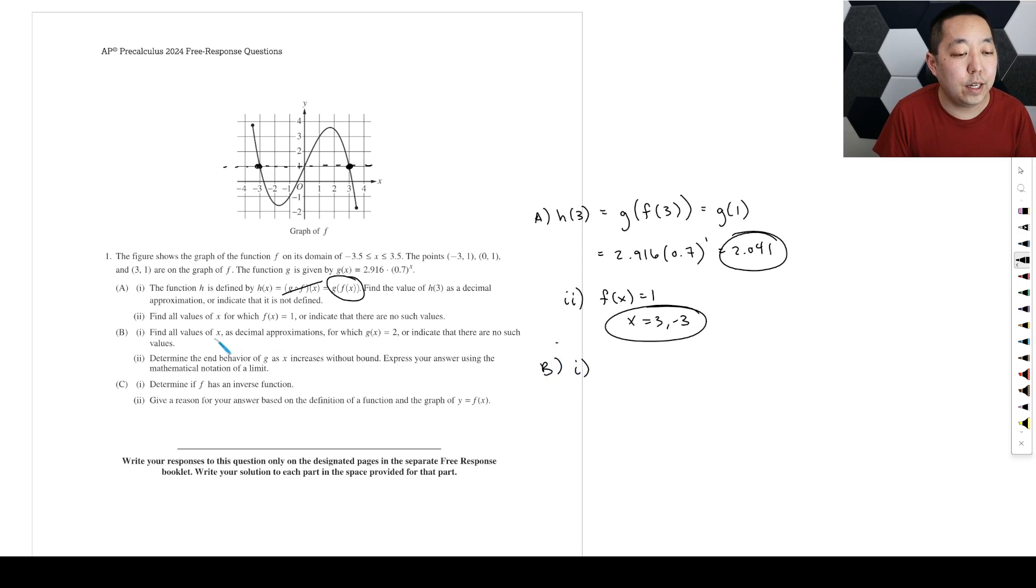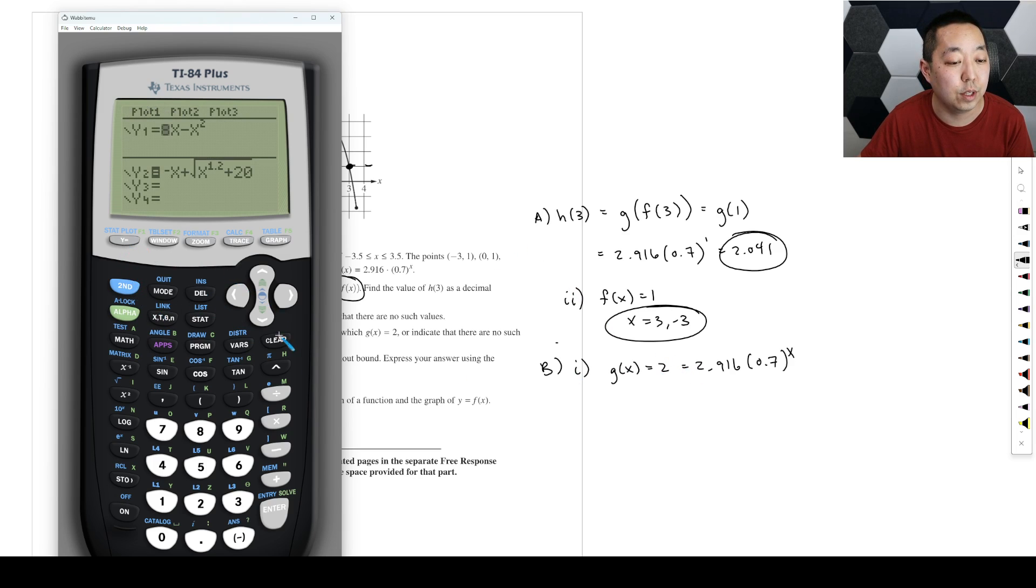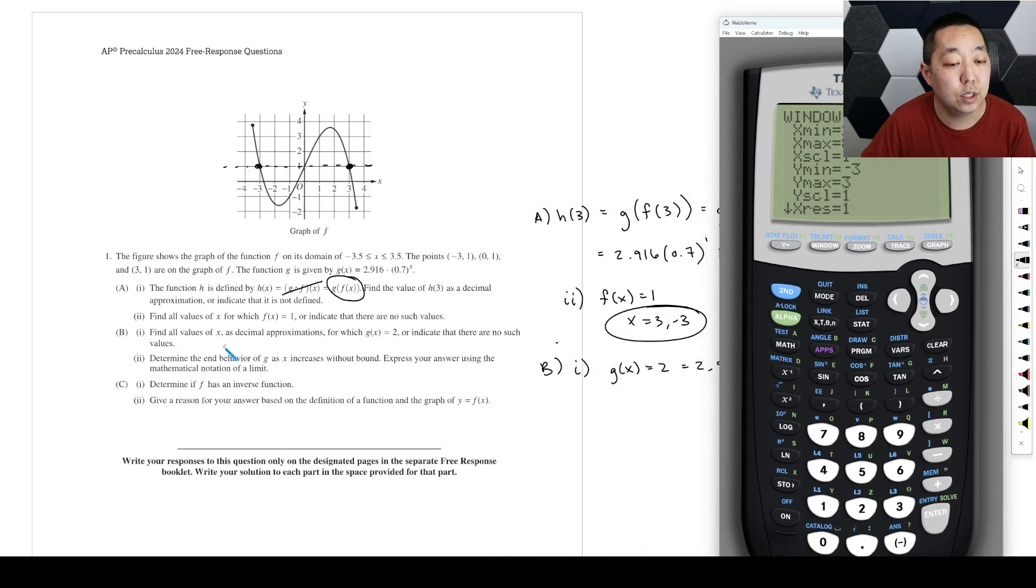Part B, find all values of X as decimal approximations for where G of X is equal to 2. So G of X equals 2 is basically us doing 2.916, 0.7 to the X and setting it equal to 2. So what we're going to do then is we want to graph this on our calculator. Probably the most straightforward way to do this is to graph the lines Y equals 2 and graph the line 2.916 times 0.7 raised to the X power. Now, windowing is really useful when you're narrowing it down, because I want the solutions. They didn't say any particular solution. So I might go from negative, usually default is zoom standard, negative 10 to 10. And I want the Y values to go from say, 0 to 3, because I know it needs to hit 2.